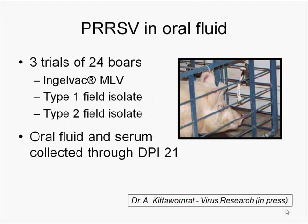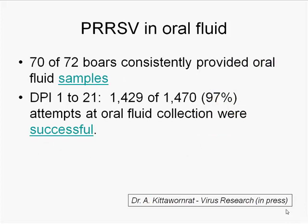The second key study looked at PRRS shedding in oral fluid. We had the two prototype studies under experimental and field conditions showing it worked, but we wanted to look at individual animals and get more precise data on levels and duration of shedding. We ran three trials with 24 boars each, examining differences based on virus isolate: trial one used a modified live vaccine, trial two used a type 1 field isolate, and trial three used type 2 — specifically Minnesota 184. We followed oral fluid and serum through day 21.